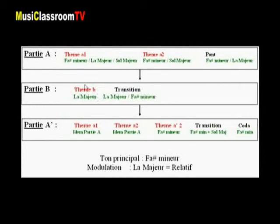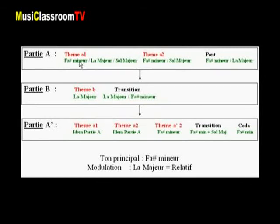Le thème B est donc exposé en la majeure, et la transition qui le suit est elle aussi en la majeure, mais s'oriente progressivement vers fa dièse mineure pour faire le lien avec la troisième partie, c'est-à-dire la réexposition du thème A. Le premier élément commence comme nous l'avions en fa dièse mineure avec de petites incursions en la majeure et sol majeur, le ton de la sixte napolitaine. Le thème A2, deuxième élément du premier thème, est lui également en fa dièse mineure, comme dans l'exposition, et se conclut sur sol majeur, le ton de la sixte napolitaine.